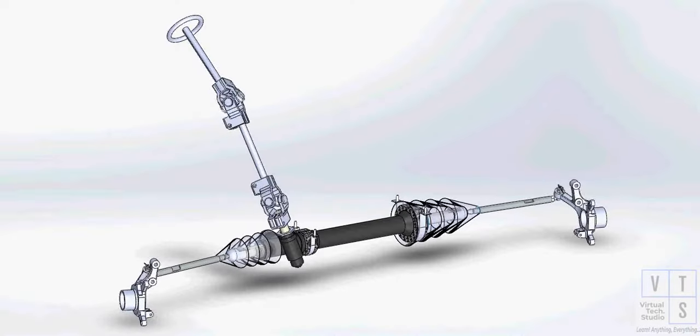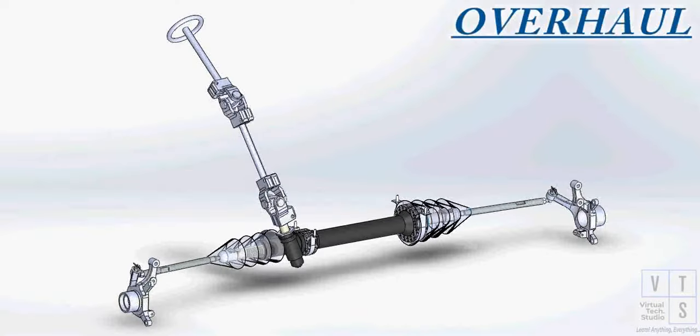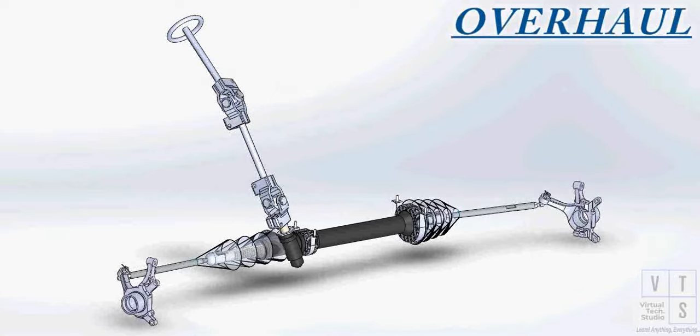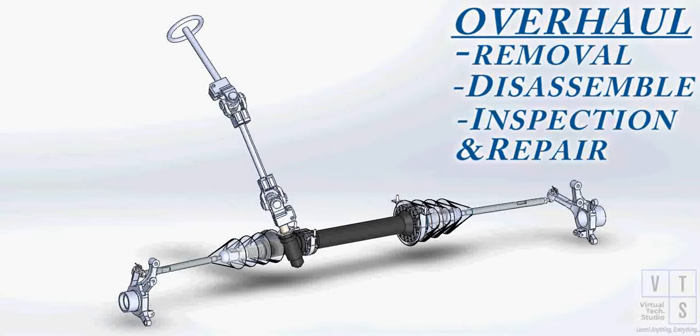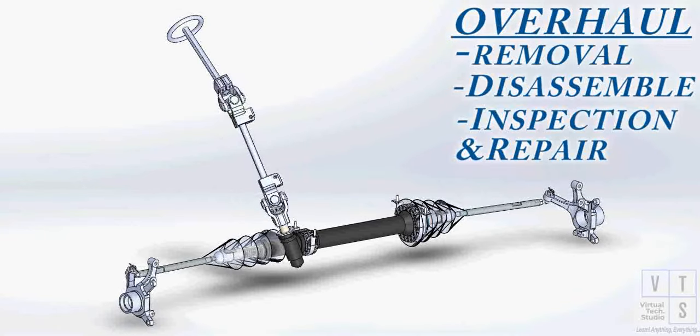In this animated presentation, we will look at how to overhaul a typical car steering system. We will go through removal, disassembly, inspection, repair or replace the parts, and finally installation after reassembling.